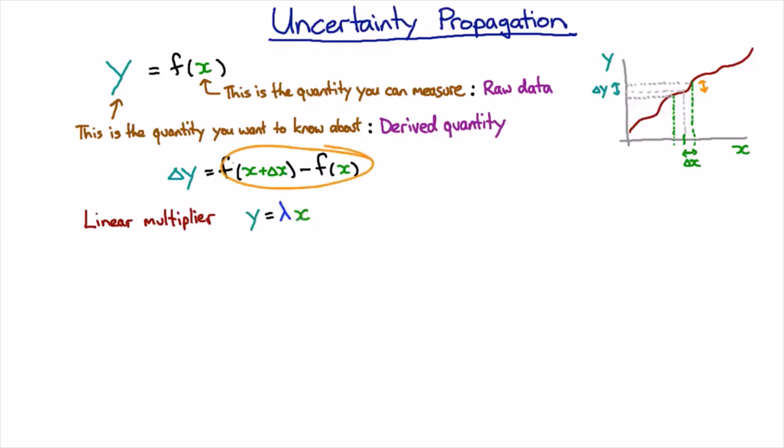And if we use this formula here, if we expand out this bracket, we're going to get lambda times x and lambda times delta x. And the lambda x is going to cancel with this lambda x and we're just going to be left with the other term.